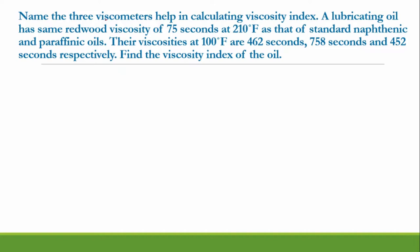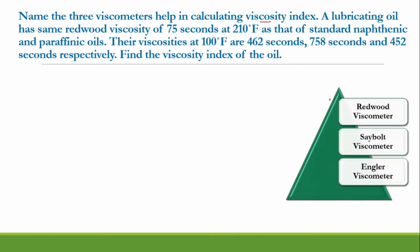Let's say this kind of question is given to you: name the three viscometers that help in calculating viscosity index. Viscosity index is calculated with the help of values of viscosity which you calculate using a viscometer, so indirectly the viscometer helps in calculating the viscosity index. A lubricating oil has the same Redwood viscosity of 75 seconds at 210°F as that of standard naphthenic and paraffinic oils. Their viscosities at 100°F are 462 seconds, 758 seconds, and 452 seconds respectively — find the viscosity index of the oil. First you need to write the viscometers.